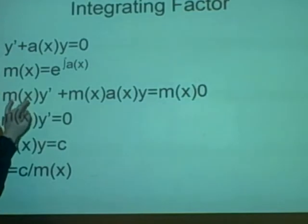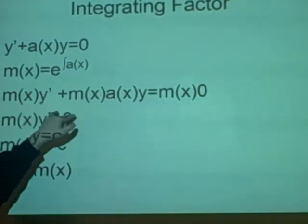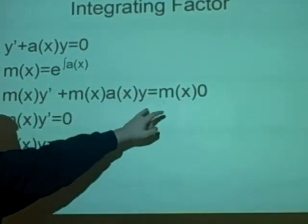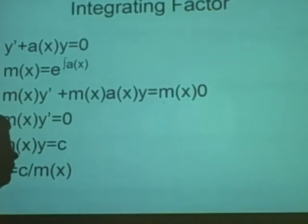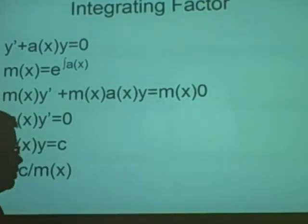What we do with this integrating factor is we times the whole equation by it. So we've times y prime, we've times a(x)y and we've times zero. Now zero will just cancel off. I'm just showing that it times everything.